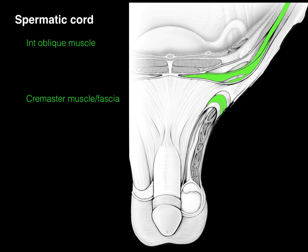The next layer is the internal oblique muscle and associated fascia, which courses down and becomes the cremasteric muscle and associated fascia. This is skeletal muscle — it contracts to pull the testis closer to the body and relaxes to allow it to move farther away. Our body temperature is 37°C, but for sperm to mature it needs to be 34°C — that's why the testis is outside the body. If the outside temperature drops, such as going into cold water, the cremasteric muscle pulls the testis closer to the body wall.